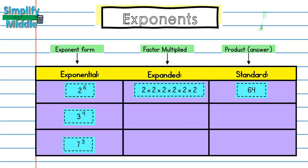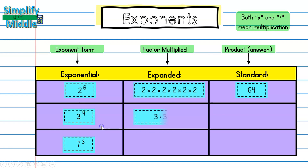There is another way to write multiplication. I have been using an x for multiplication, but we are actually going to use another symbol to show multiplication, which is simply a circle. So let's go ahead and look at 3 to the 4th power. I know that I'm going to be repeating 3, my base, 4 times. So I'm going to be multiplying 3 by itself 4 times: 3 times 3 times 3 times 3.